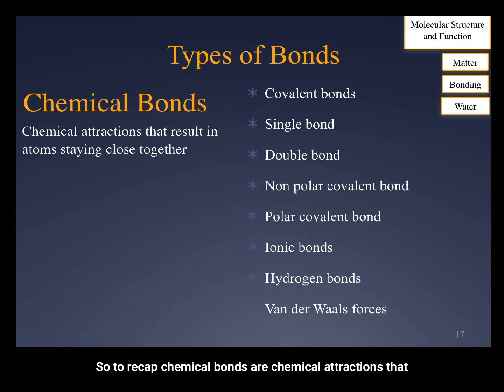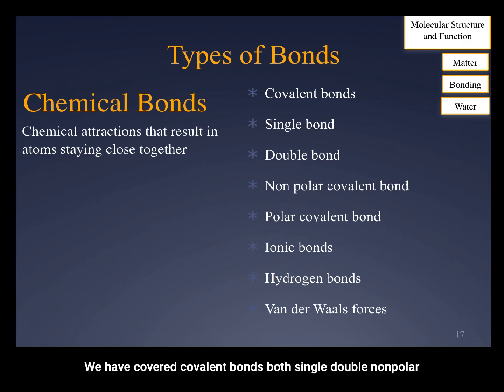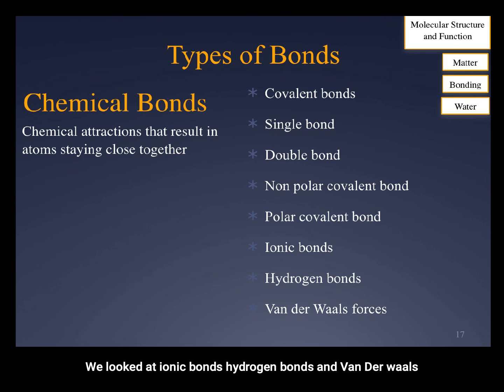To recap, chemical bonds are chemical attractions that result in atoms staying close together. Today we have covered covalent bonds — both single, double, nonpolar, and polar covalent bonds — as well as ionic bonds, hydrogen bonds, and van der Waals forces.